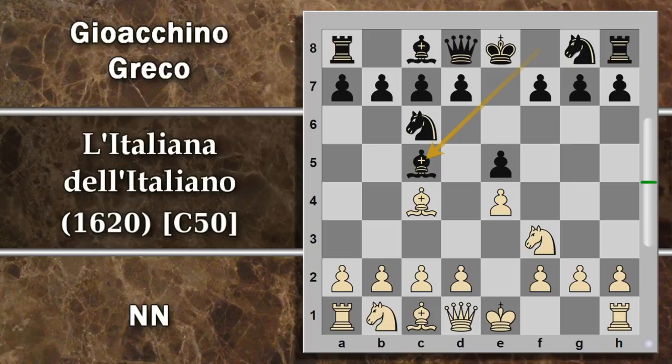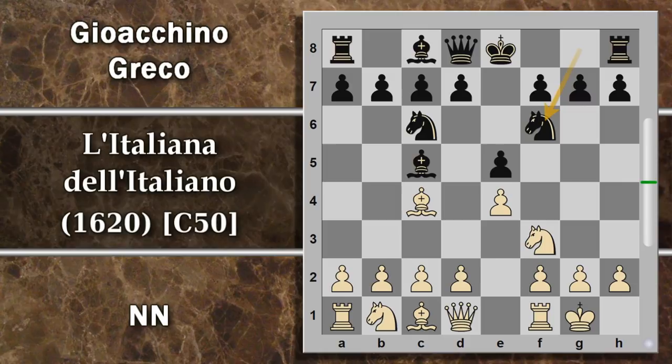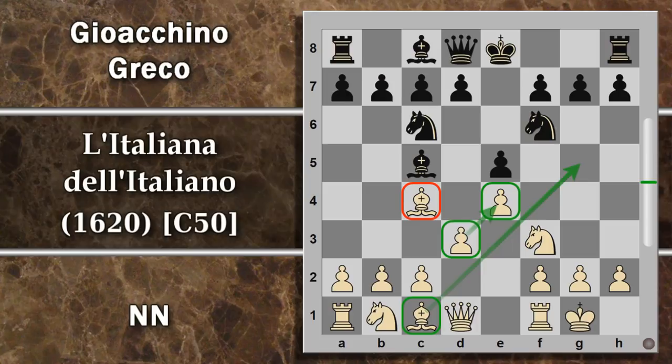Dopodiché alfiere C5, anche questa abbastanza giocata, si va subito a mirare su F2 e il bianco arrocca mettendo al sicuro questo punto. Al che cavallo F6. Ora qui normalmente si gioca D3, che sembra un pochino passiva perché chiude la diagonale all'alfiere, ma l'alfiere è già fuori. In più si apre la strada all'alfiere campo scuro, difendendo anche questo pedone attaccato dal cavallo.